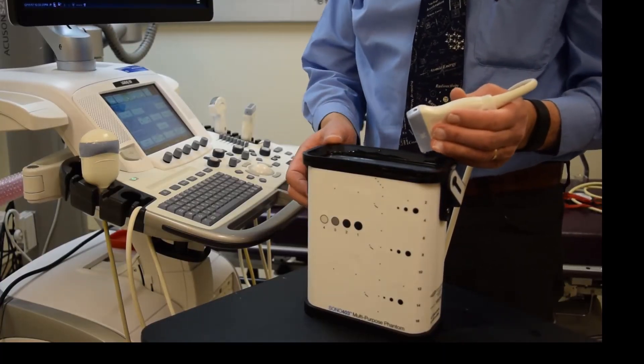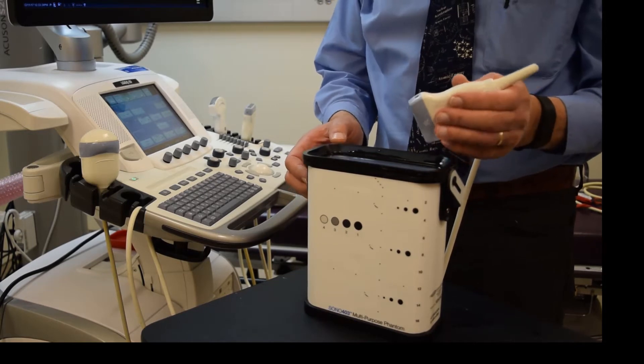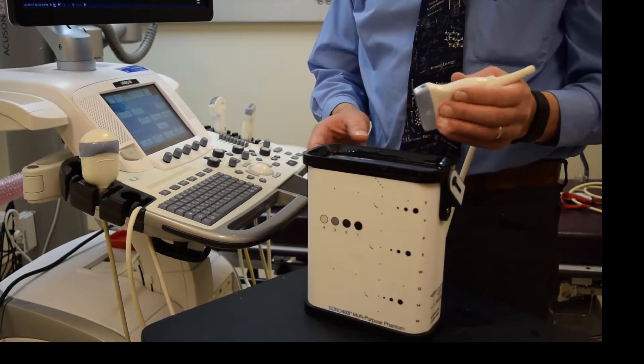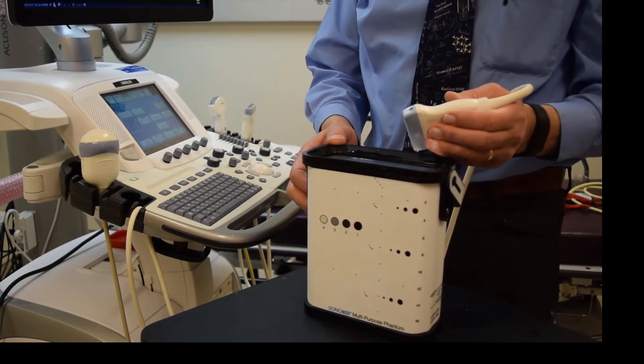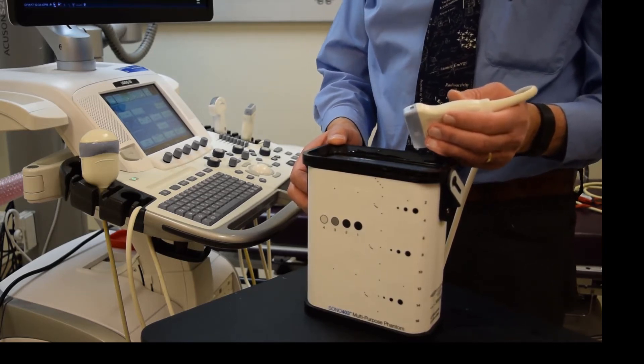Sun Nuclear's SANO 403 Phantom is shown here. It's a general purpose phantom ideal for ACR tests. It's tissue mimicking, meaning it has a sound speed of 1540 meters per second.